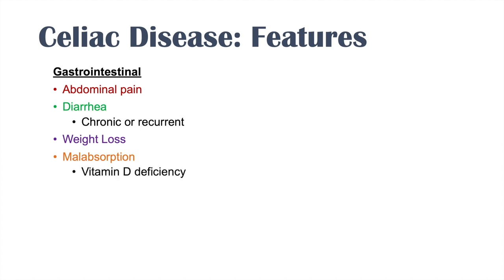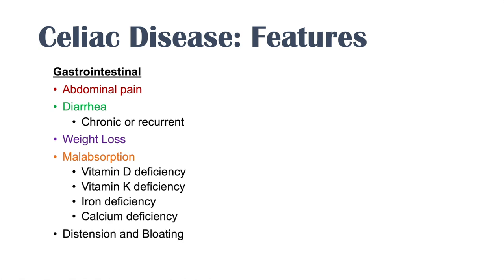Particular nutritional deficiencies include vitamin D, vitamin K, iron, folic acid, and calcium — as discussed earlier. We can also get distension and bloating due to diarrhea, and steatorrhea, since we are unable to absorb or digest fats well. This also leads to loss of fat-soluble vitamins.